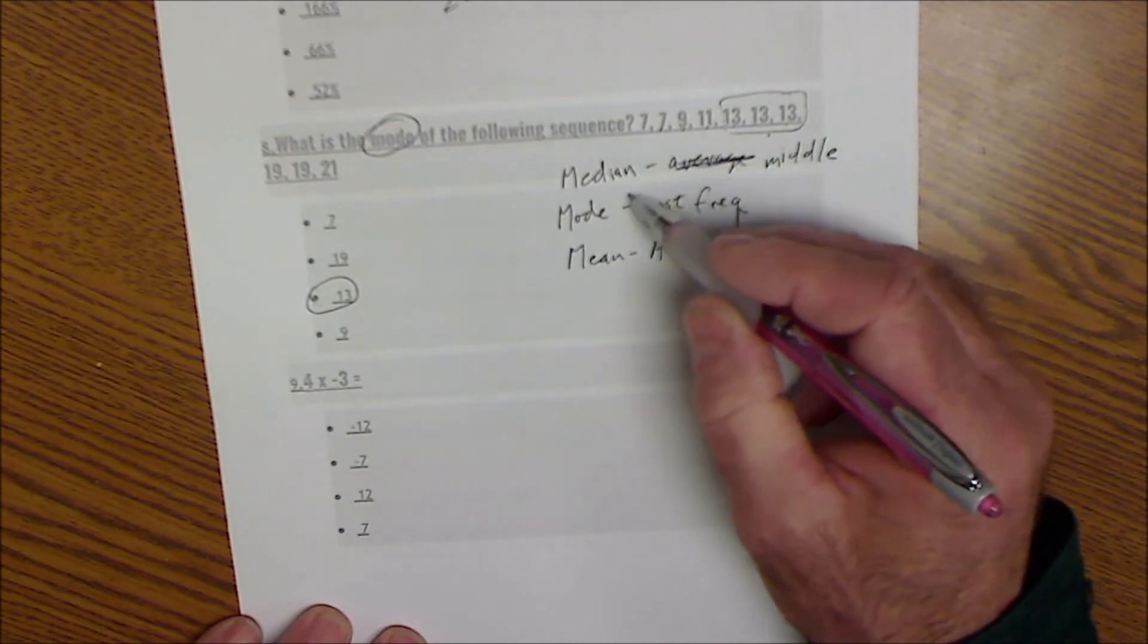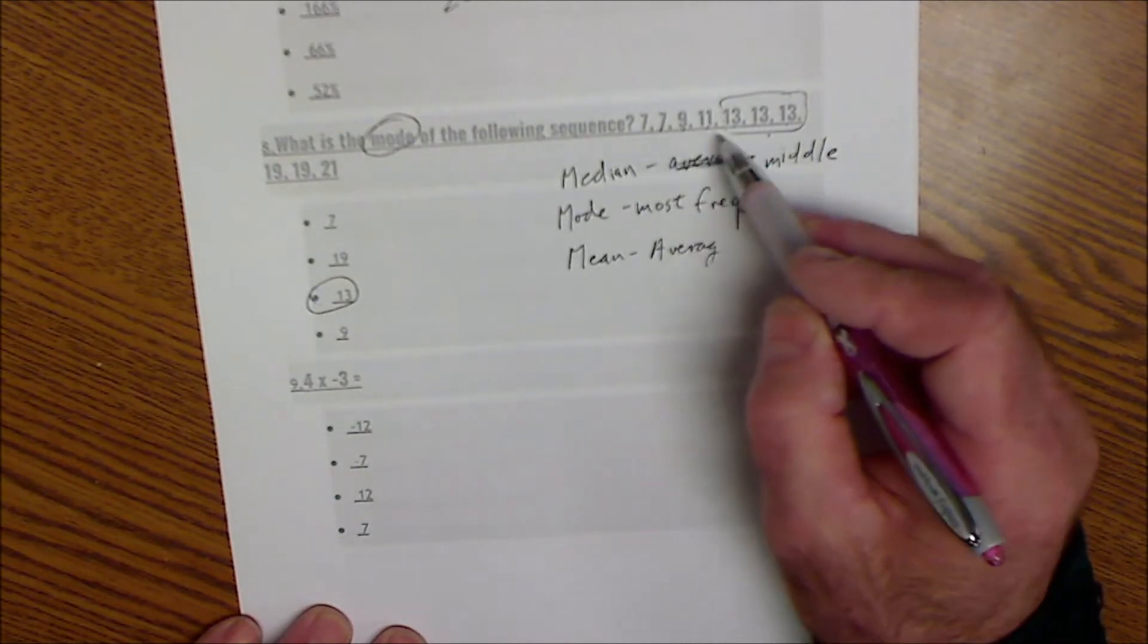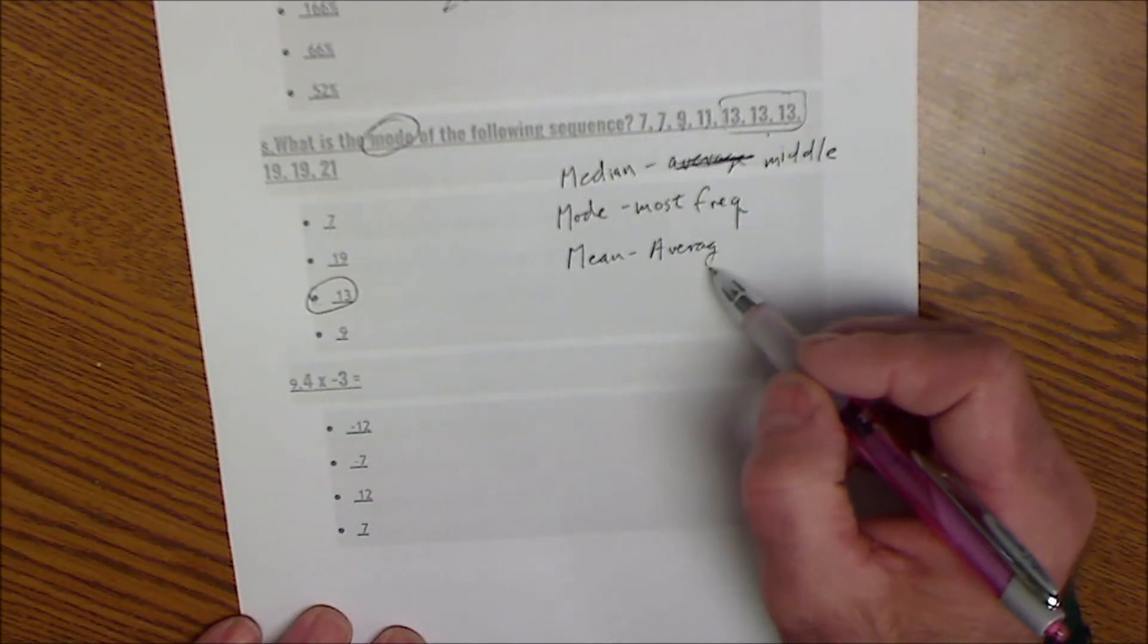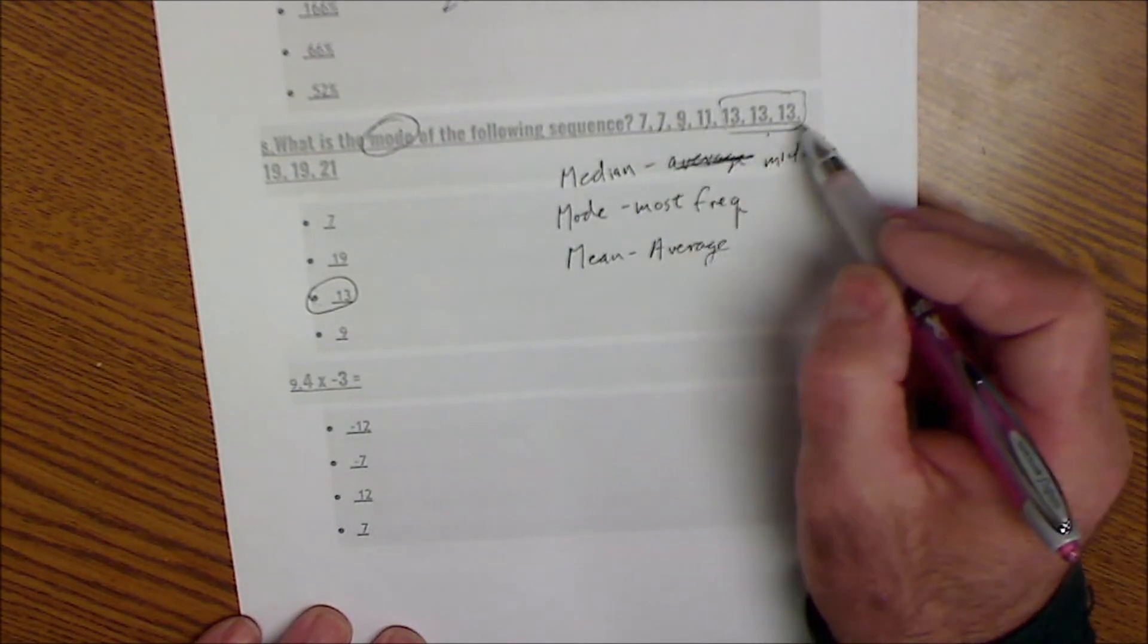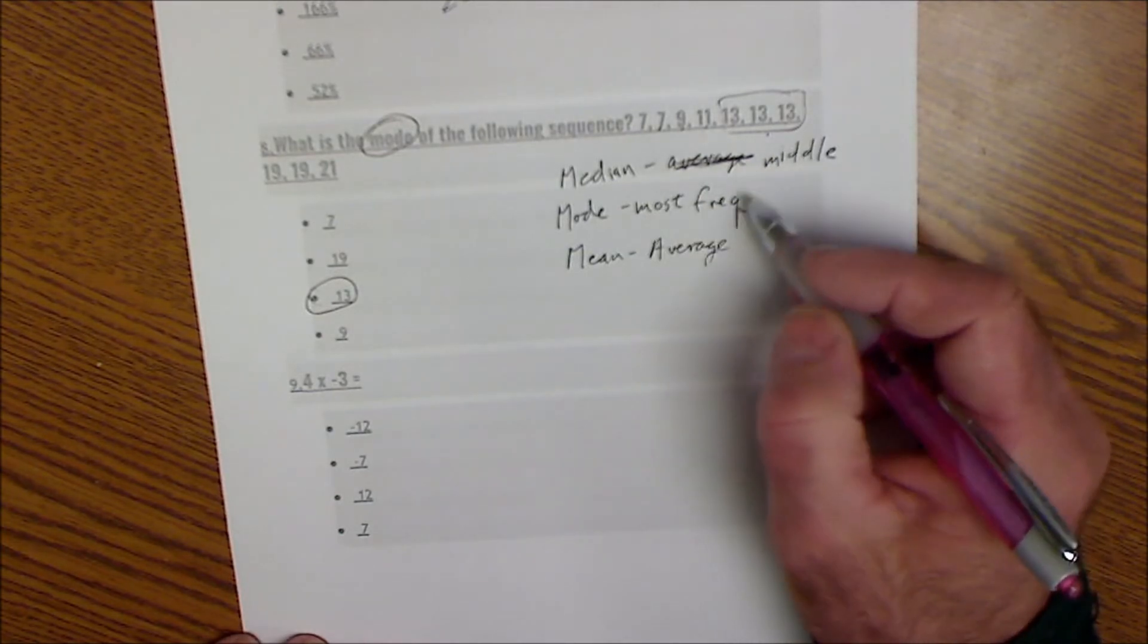The median is the middle number, and the mean is the average. So if they asked you the median, that would be the middle number, that would be 11, because there are three values below it and three values above it. The mean would be the overall average. I'd add up those seven values and divide by 7. But the mode is the one that happens most frequently.